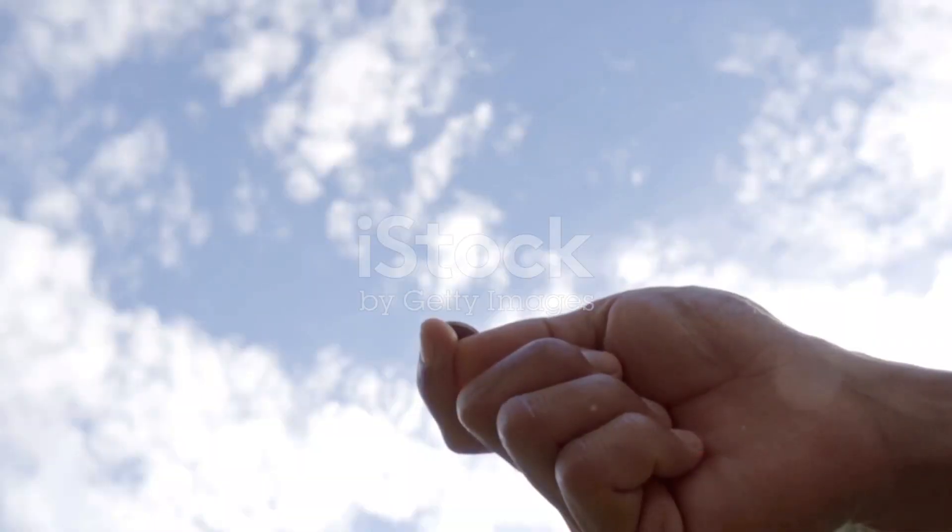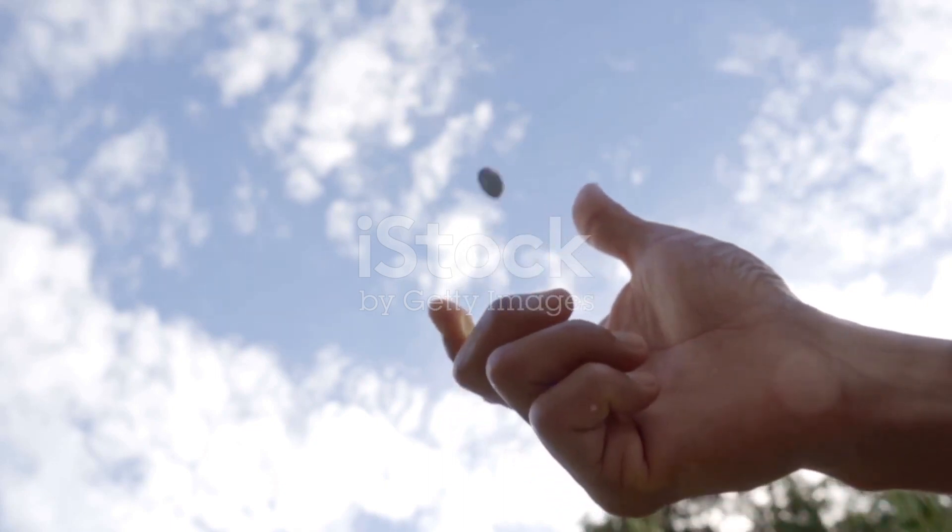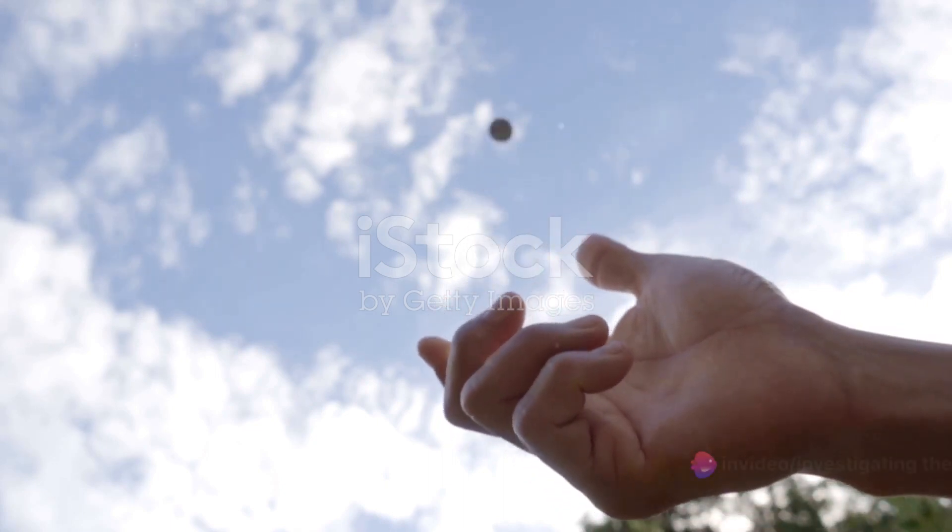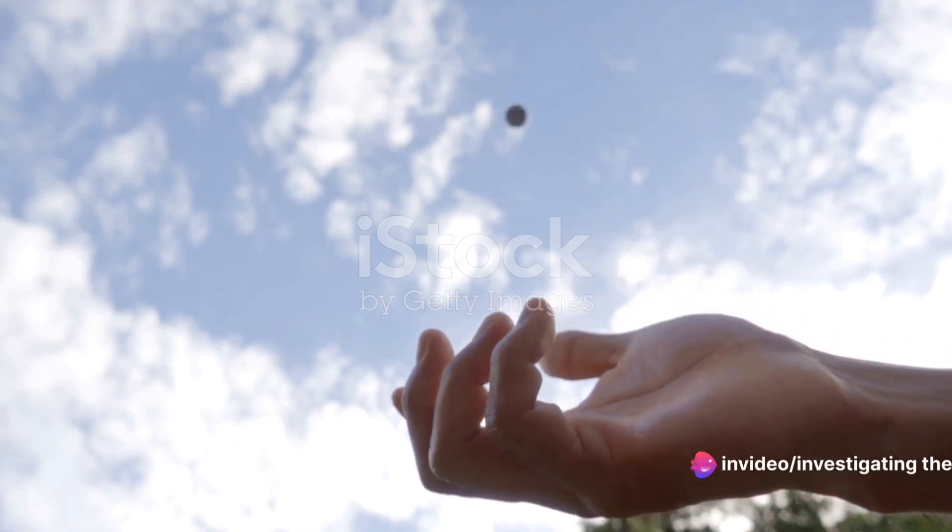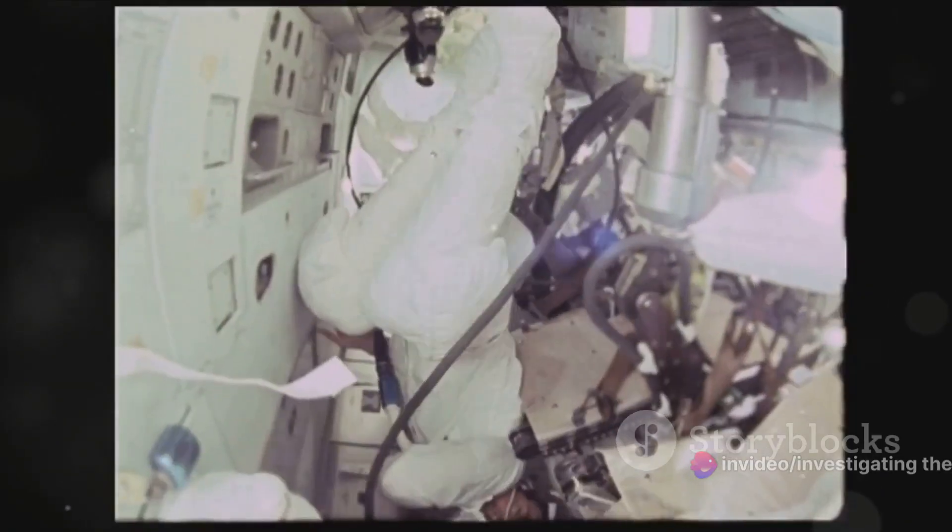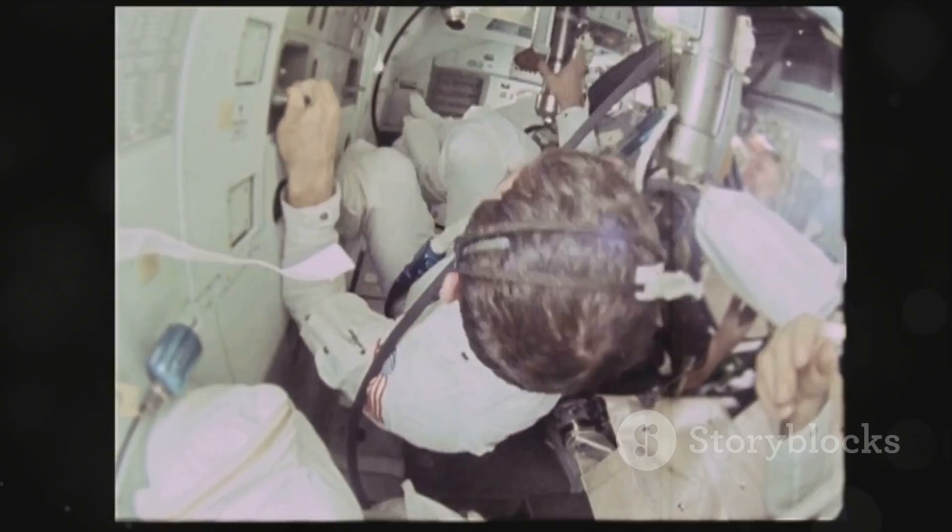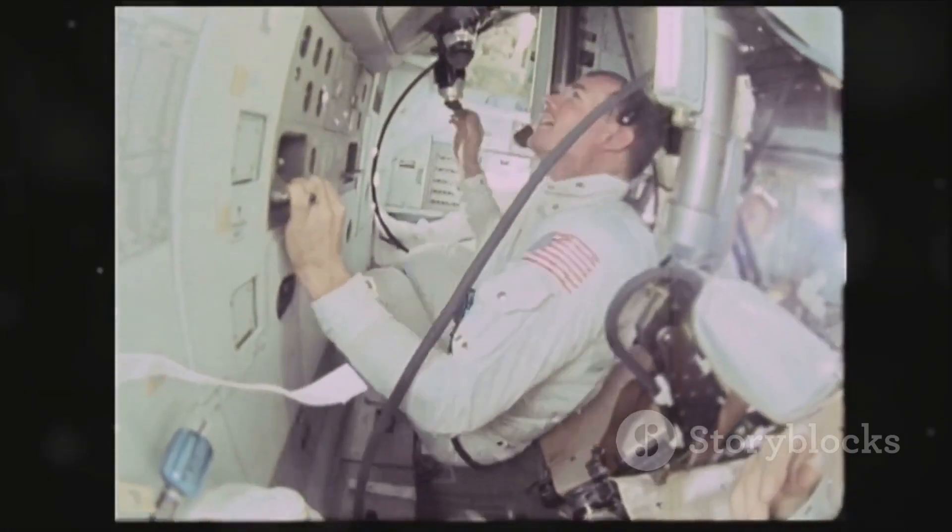Imagine flipping a coin. According to the many-worlds interpretation, the universe splits into two when the coin is in mid-air, one where the coin lands heads, and another where it lands tails. In one universe, you're living the reality where the coin landed heads, while in another, an alternate version of you is contemplating why the coin landed tails.